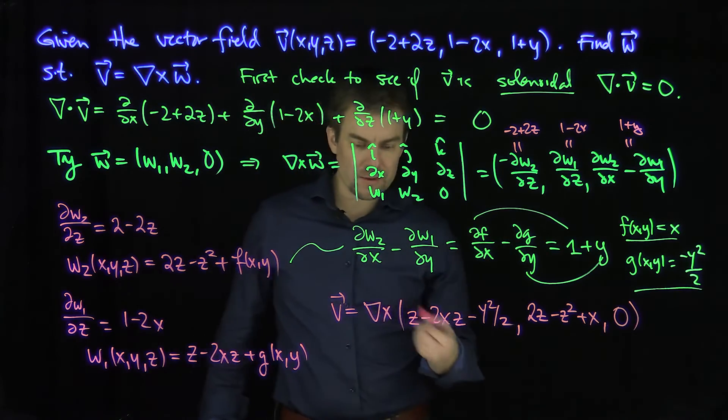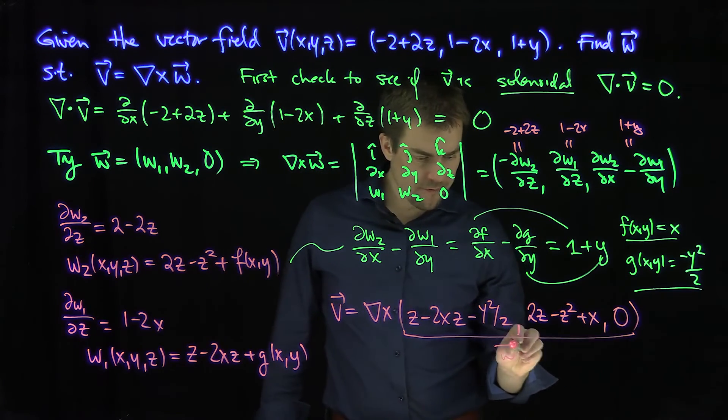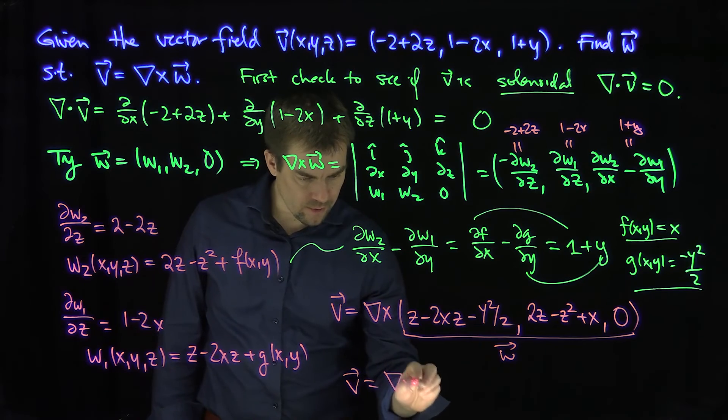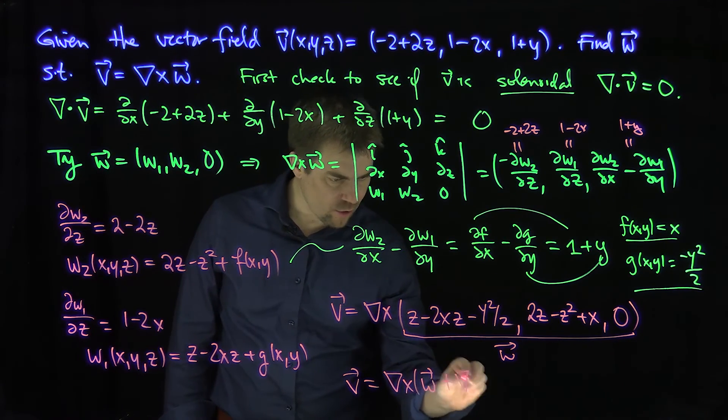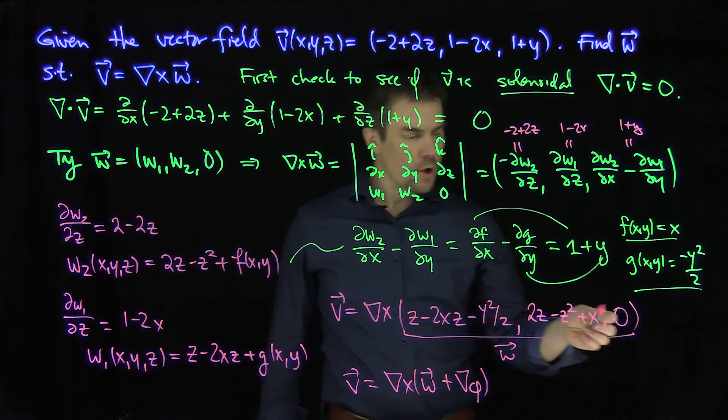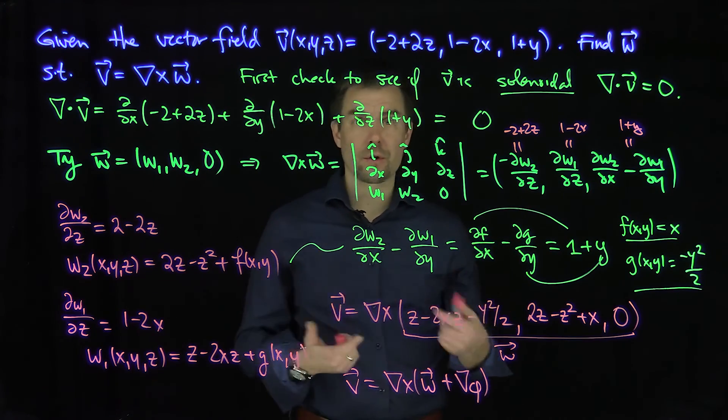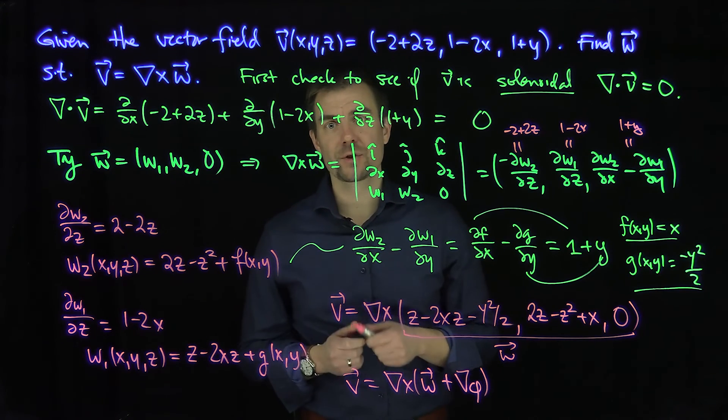And again, this is true up to gradients, so I can take this as my vector field w. If this works, then it's also true that v is the curl of this vector field we chose w, plus any gradient vector field, right? Because the curl of a gradient is equal to 0. So you can add on any gradient to this, and it will remain that v is the curl of w, plus whatever that gradient vector field you chose was. Thank you very much.